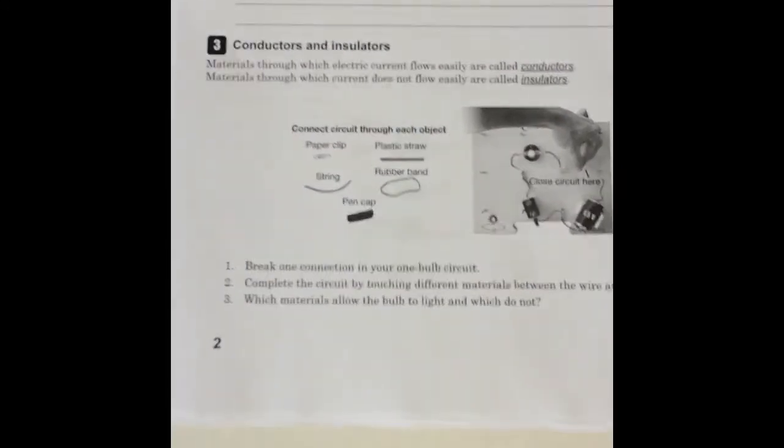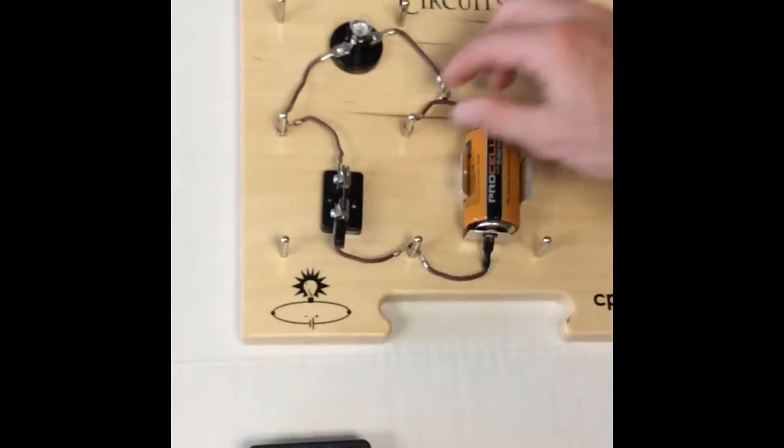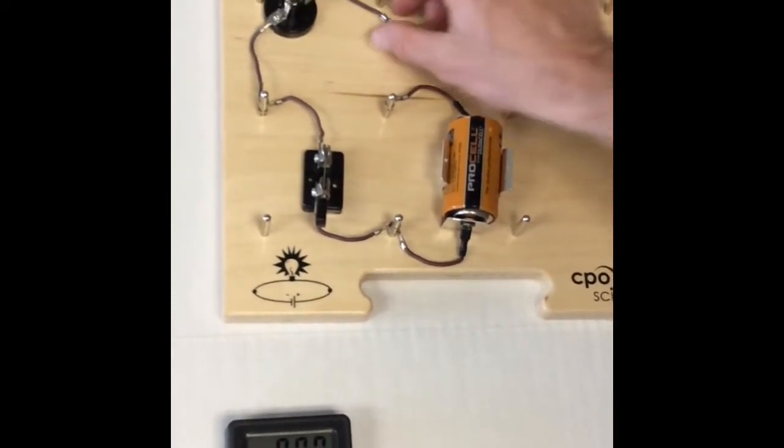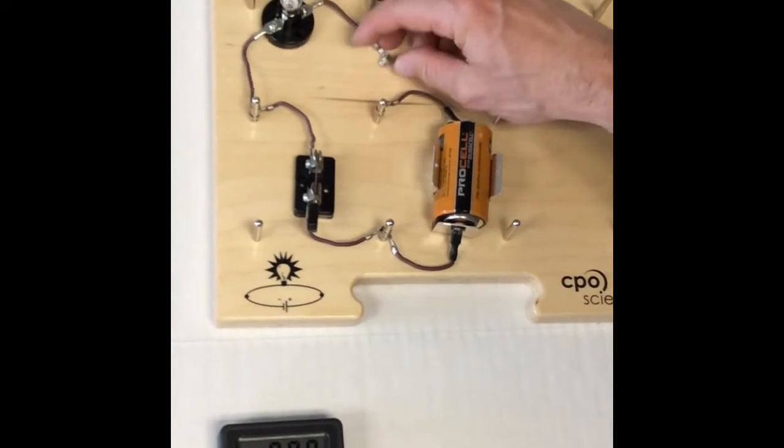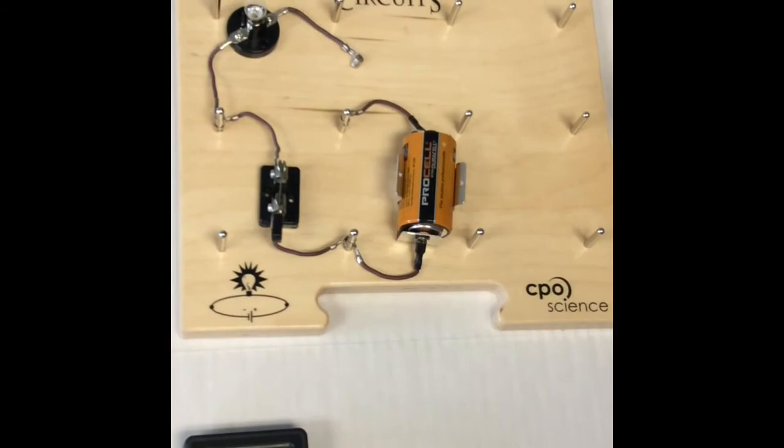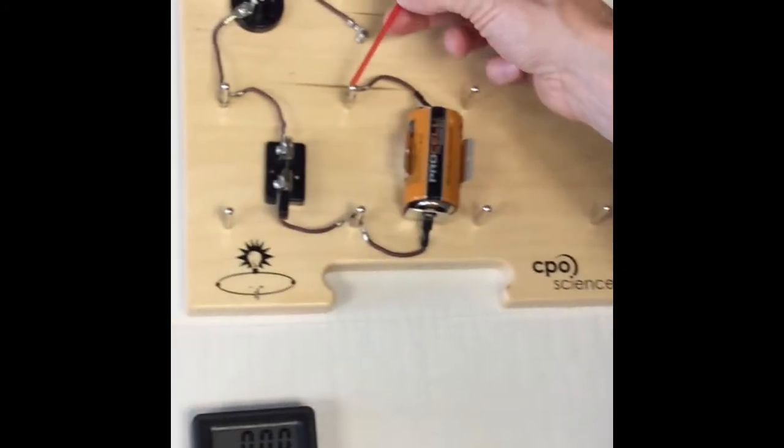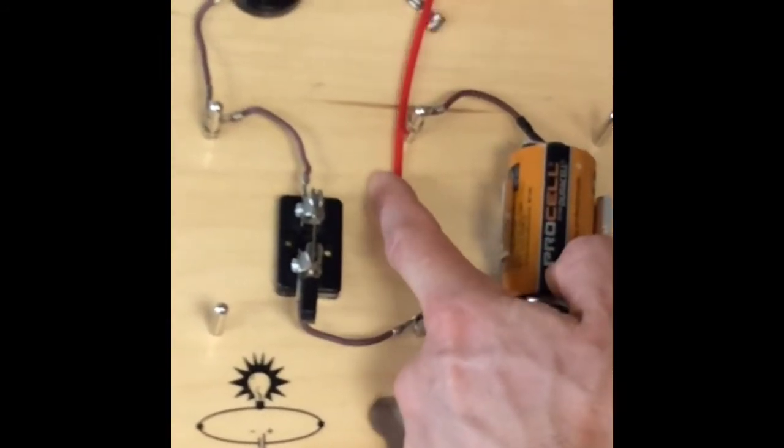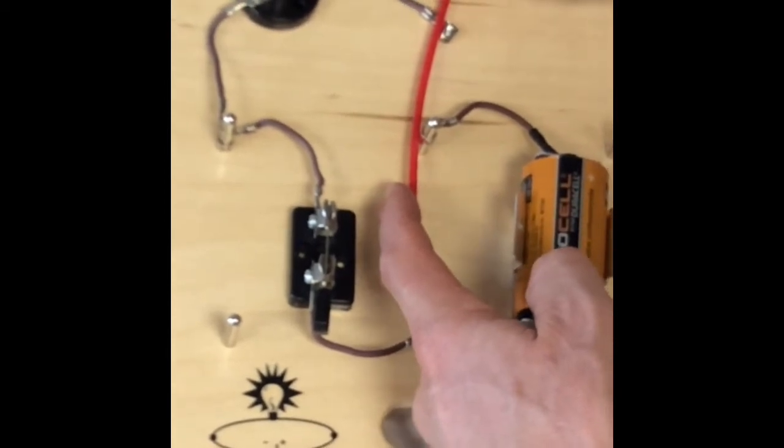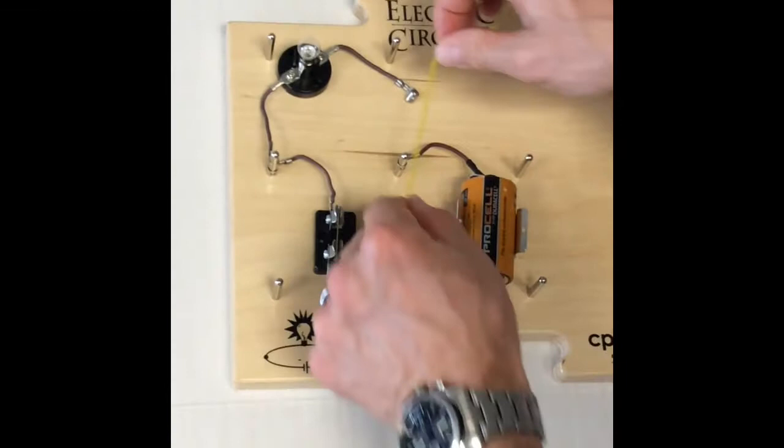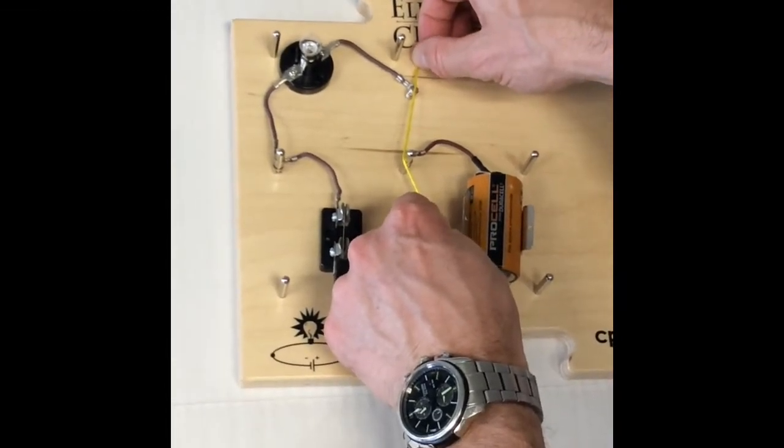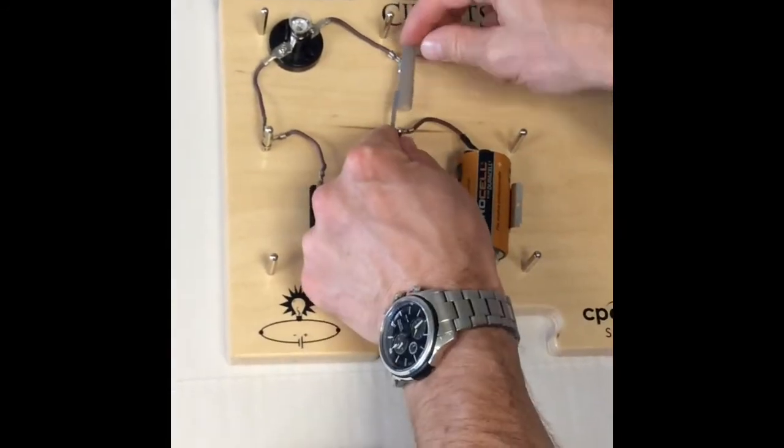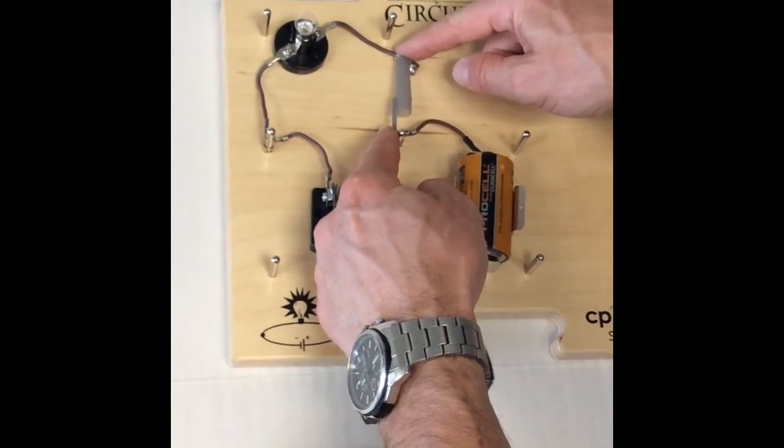So what we need to do is figure out what are some common items that are insulators and some that are conductors. How we're going to do that is we're going to unhook one of the wires. You can see I've chosen to unhook this one right here. We're going to try and bridge that gap with our material. Here's our plastic straw. Make sure I'm touching this post and very clearly make sure I'm touching this other metal piece. Light doesn't come on. Here's our string. We're going to repeat the process. Post to piece, nothing.